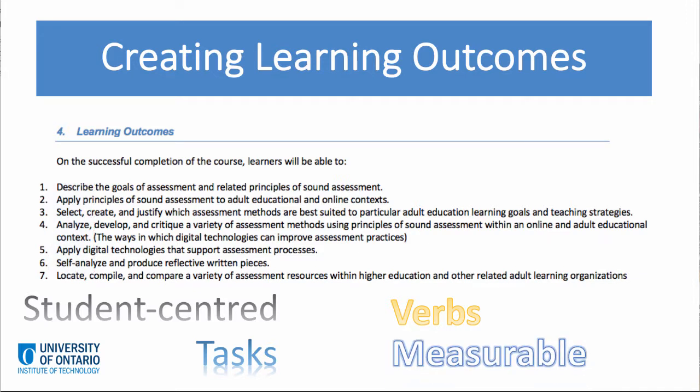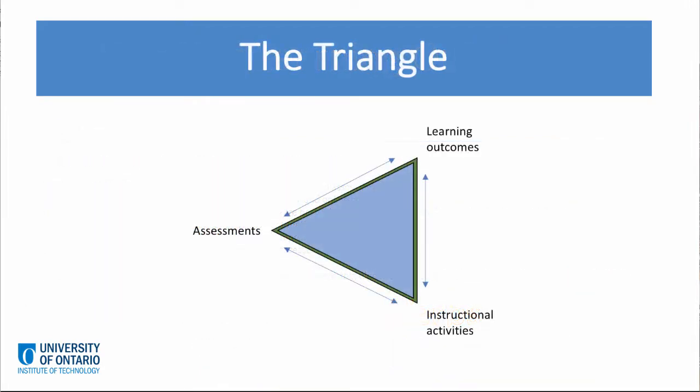Finally, the learning outcomes must be measurable. Ask yourself: how will students demonstrate their understanding? What will they and the facilitators see or hear as evidence of their learning? The tangible learning outcomes inform the instructional activities, which informs the assessment, which also informs the learning outcomes. There is a tension between the three that must be maintained, with each supporting the others. Therefore, when we create assessments, we must ensure we provide the appropriate instructional activities and the assessments aligned with the learning outcomes.